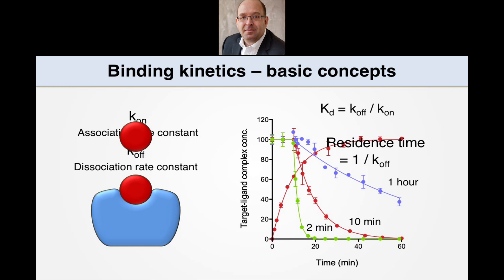Association is governed by the association rate constant termed K-ON. K-ON can be viewed as the rate of recognition of the drug by the target. Drug can then dissociate from the target, and this is governed by the dissociation rate constant, K-OFF. We can measure this in a dissociation experiment in which drug and target are incubated together, and then the free drug is washed out or out-competed with an inhibitor. This gives us the classic exponential decay curve. The dissociation rate constant is of considerable interest to drug discovery. K-OFF can be viewed as a measure of the duration of the drug-target complex, which can govern drug activity in vivo.